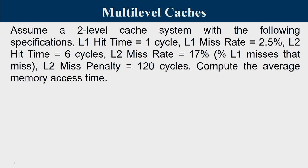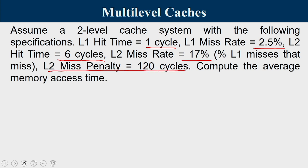Assume a 2-level cache system with the following specifications: L1 hit time is 1 cycle, L1 miss rate is 2.5%, the hit time of L2 cache is 6 cycles with a 17% miss rate. This 17% is defined as the percentage of L1 misses that also miss in L2. The miss penalty of L2 is 120 cycles. Compute the average memory access time.